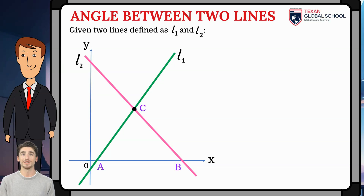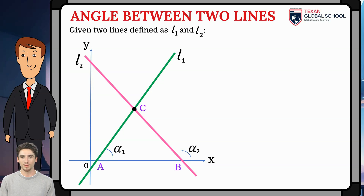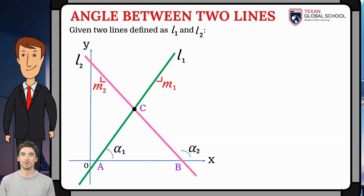We can see that A and B are the points that intersect the x-axis. The angles of inclination of the lines are denoted as alpha1 and alpha2. Each line has its slope m1 and m2 respectively. The angles of the two lines are defined as theta1 and theta2. It is very important to differentiate each of these angles.